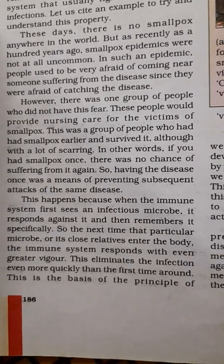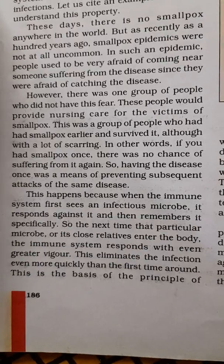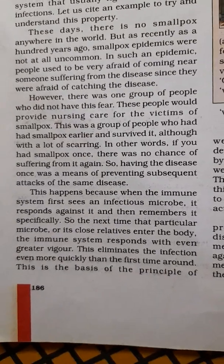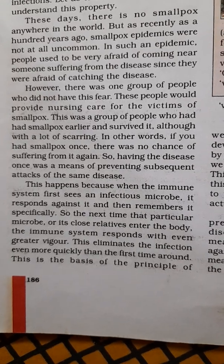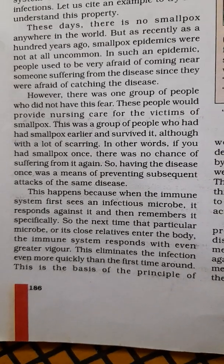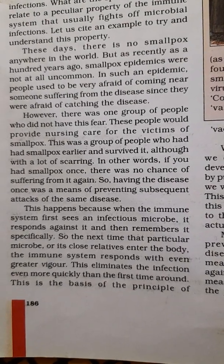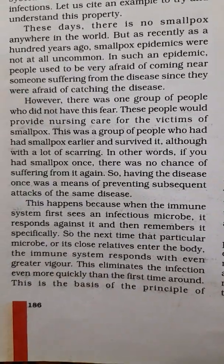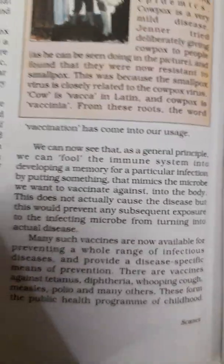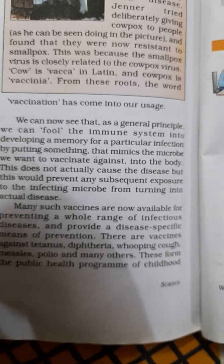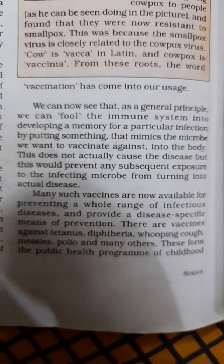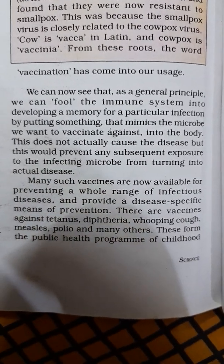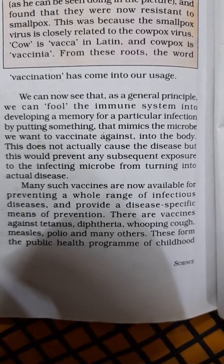This happens because when the immune system first sees an infectious microbe, it fights it and then remembers it specifically. Next time that microbe enters the body, the immune system already remembers it and responds with great vigor, eliminating the infection more quickly than the first time. This is the concept of vaccination. As a general principle, we can fool the immune system into developing a memory for a particular infection by putting something that mimics a microbe — what we want to vaccinate against — into the body.